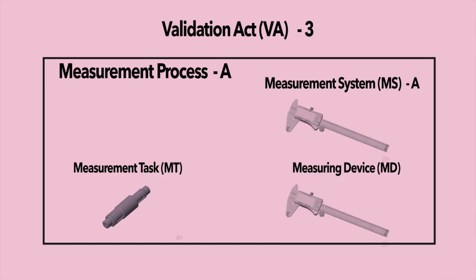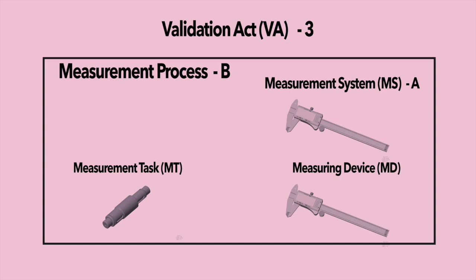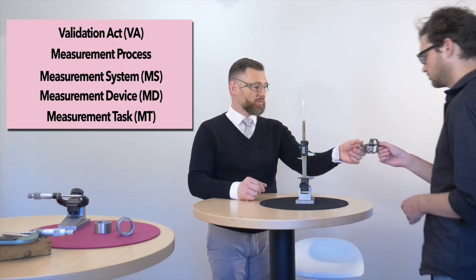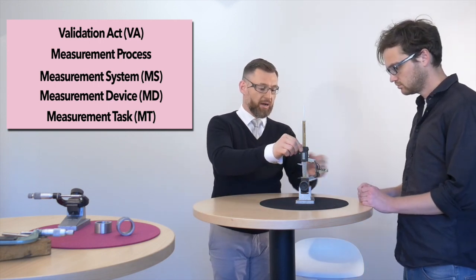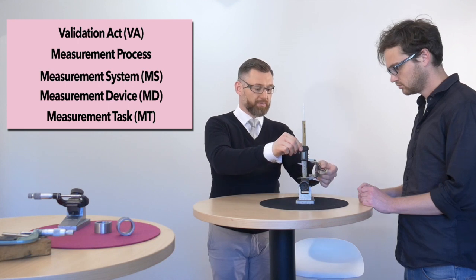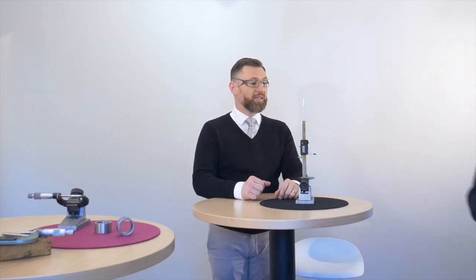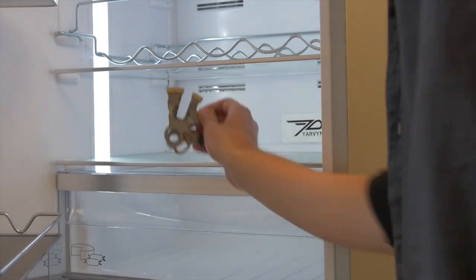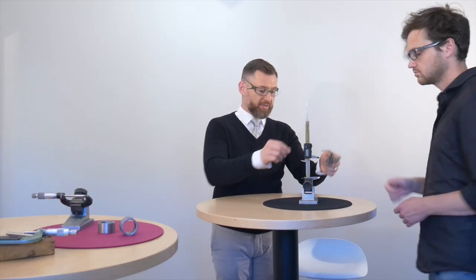Also, it is possible that one measurement system is being used with the same measurement task but in different measurement processes. This is, for example, when one measuring device is being used, but sometimes we measure the part immediately after the machining process, but sometimes we let the part to be cleaned and temperature stabilized to reduce variation for special checks. This is two different measurement processes that also require separate validation acts.